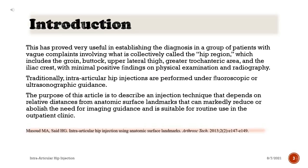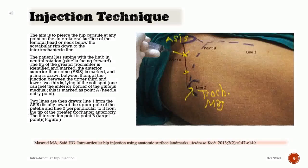This has proved very useful in establishing the diagnosis in patients with vague complaints involving the hip region, which includes the groin, buttock, upper lateral thigh, greater trochanteric area, and iliac crest, with minimal positive findings on physical examination and radiography. Traditionally, intra-articular hip injections are performed under fluoroscopic or ultrasonographic guidance. The purpose of this article is to describe a technique using relative distances from anatomic surface landmarks that can markedly reduce or abolish the need for imaging guidance, suitable for routine outpatient use.